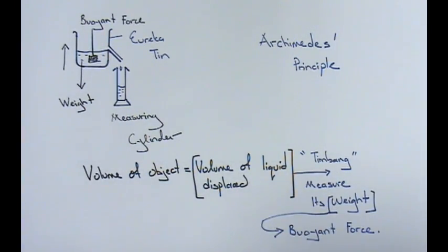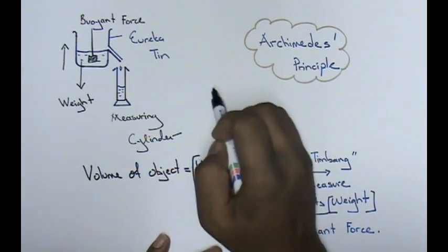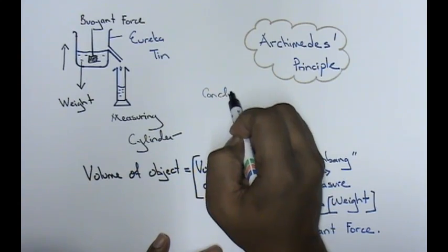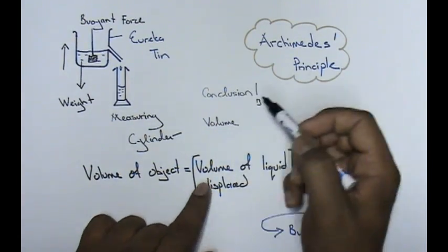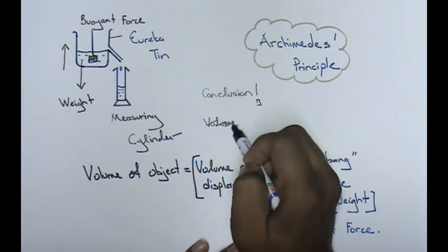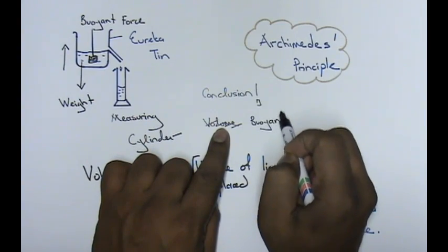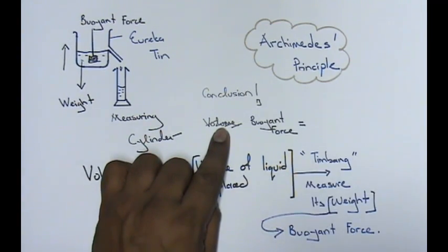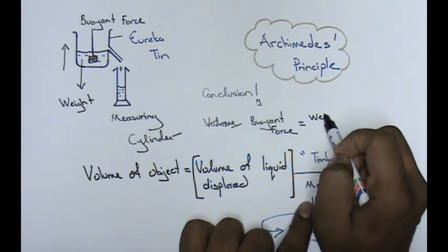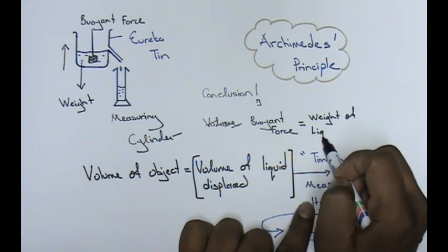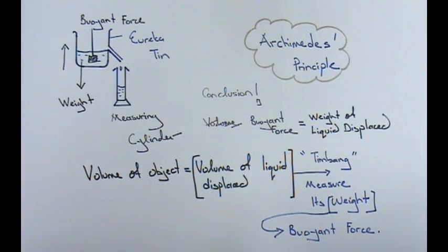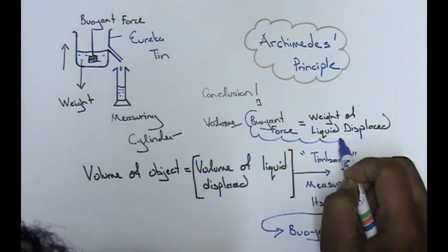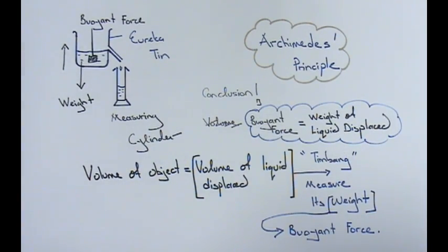What conclusion can we make with Archimedes principle? As I said, the concept is very straightforward. Let me give you an easier version. This is a simpler conclusion: the buoyant force equals the weight of liquid displaced. This is the conclusion that we can come up with.